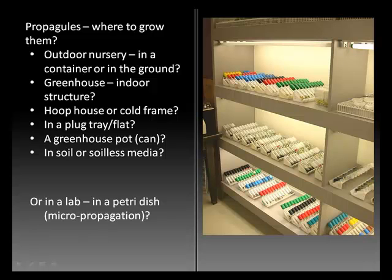Propagules can also be grown in a plug tray or a flat, perhaps under a grow lamp in your own home, in a greenhouse pot or can. An important choice is whether to grow propagules in soil or to take advantage of the benefits of soilless media. Lab plants grown in petri dishes or test tubes are examples of micropropagation.